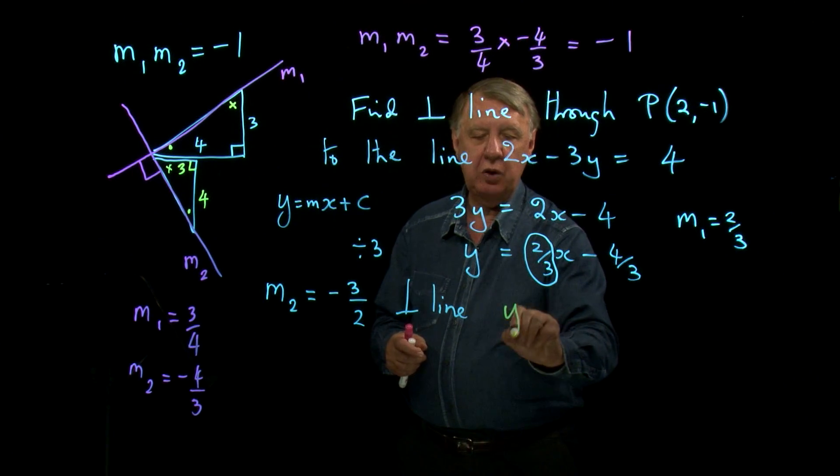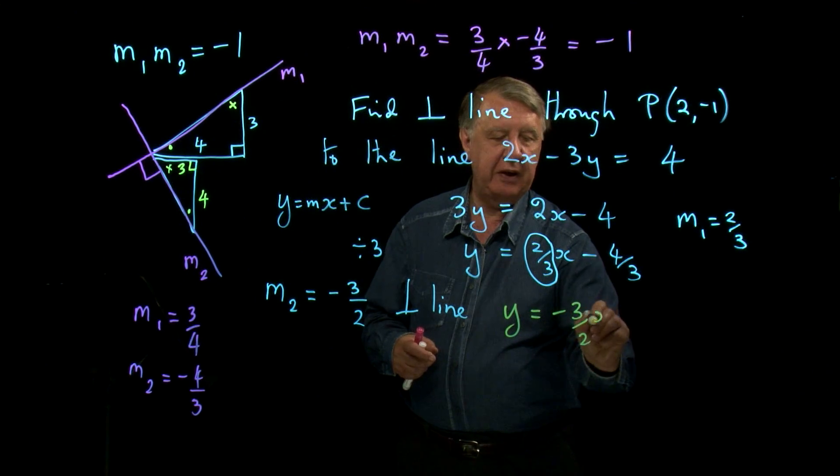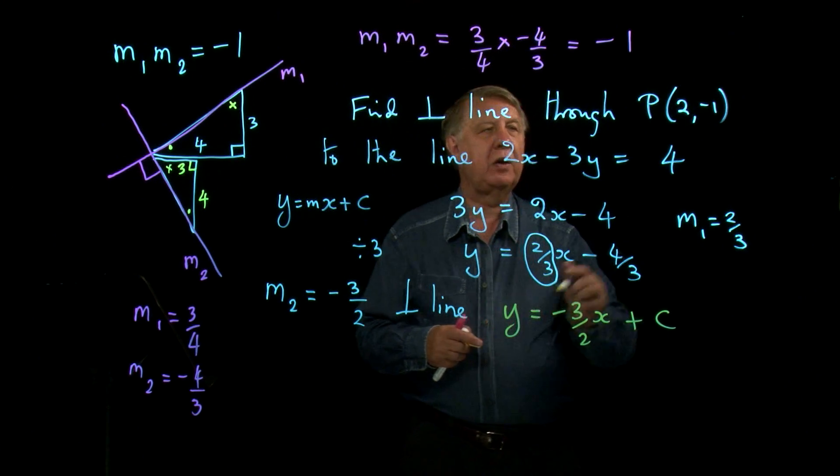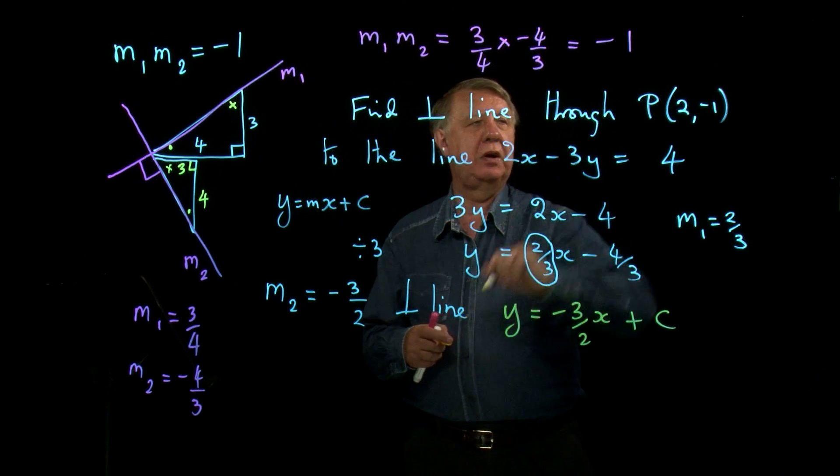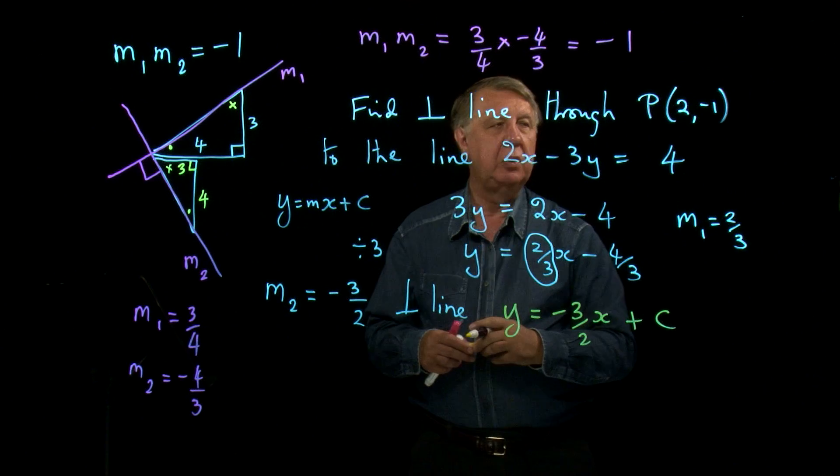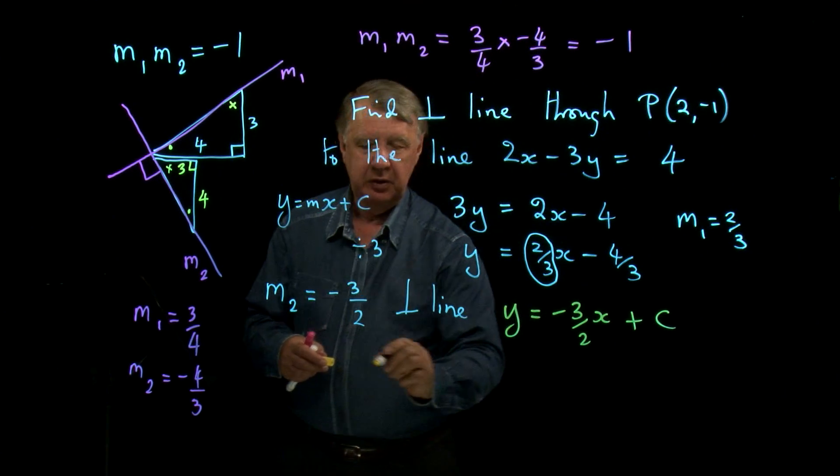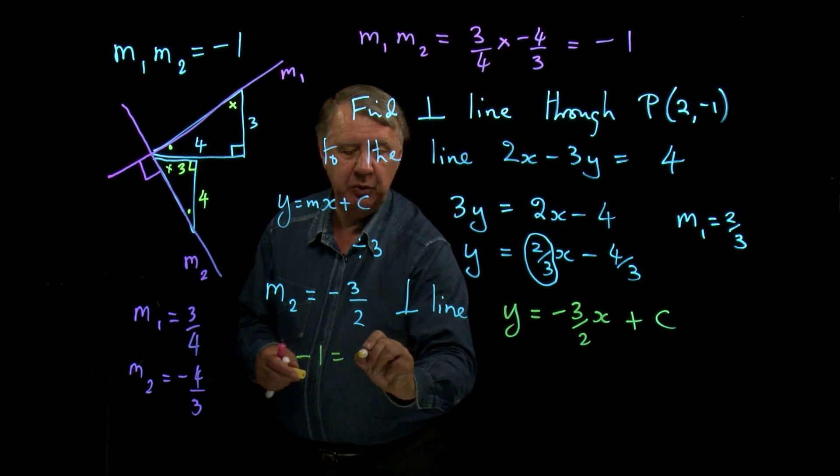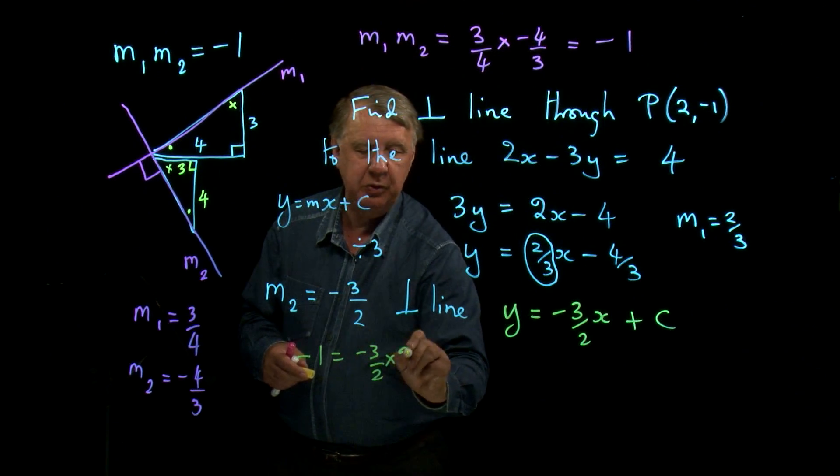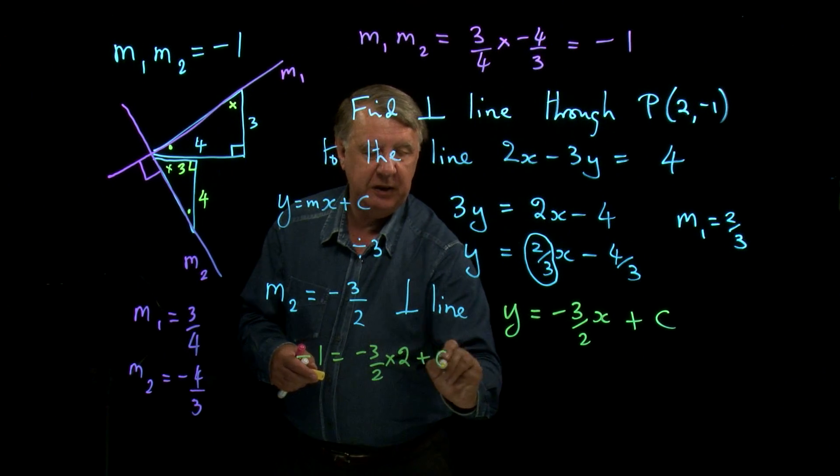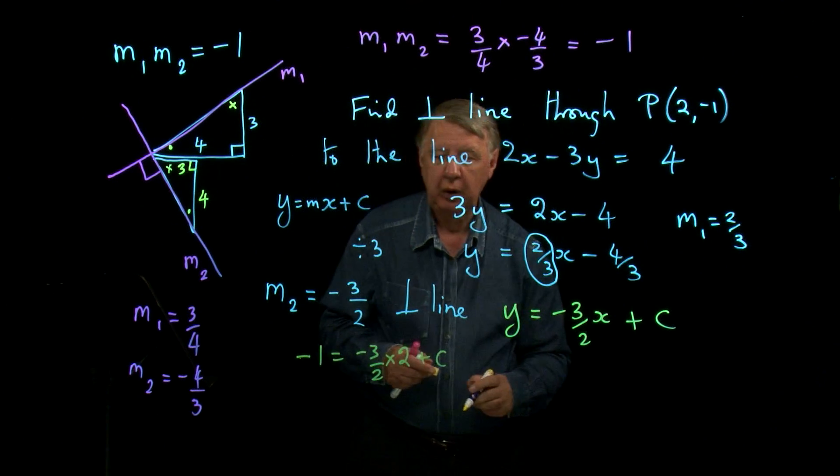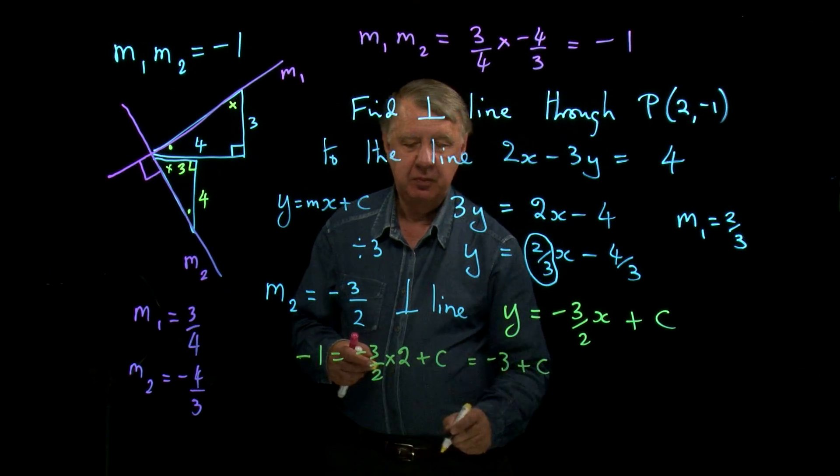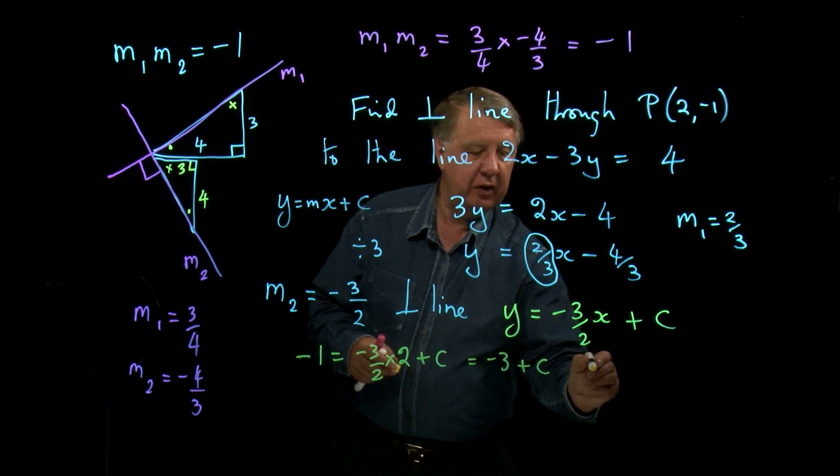It has to go through this particular point when x is 2, y is negative 1. So if I substitute those values, then negative 1 has got to equal negative 3 over 2 times 2 plus c, which is negative 3 plus c. Add 3 onto the other side.